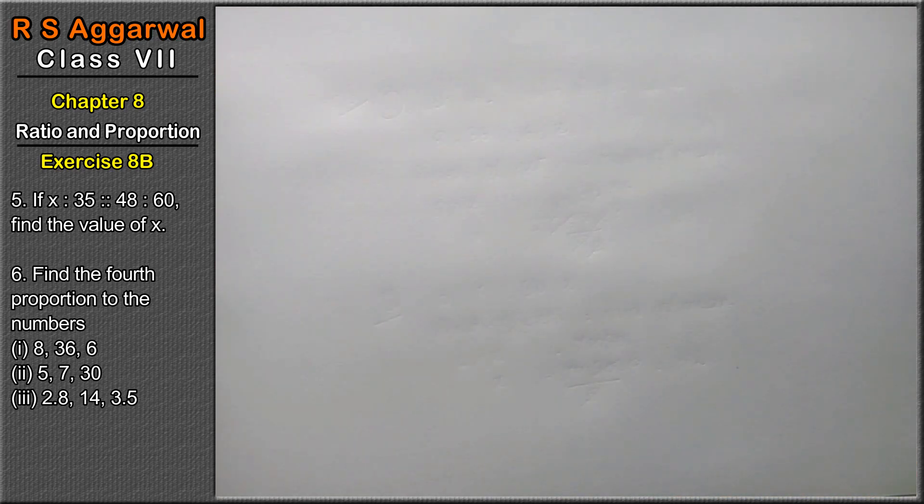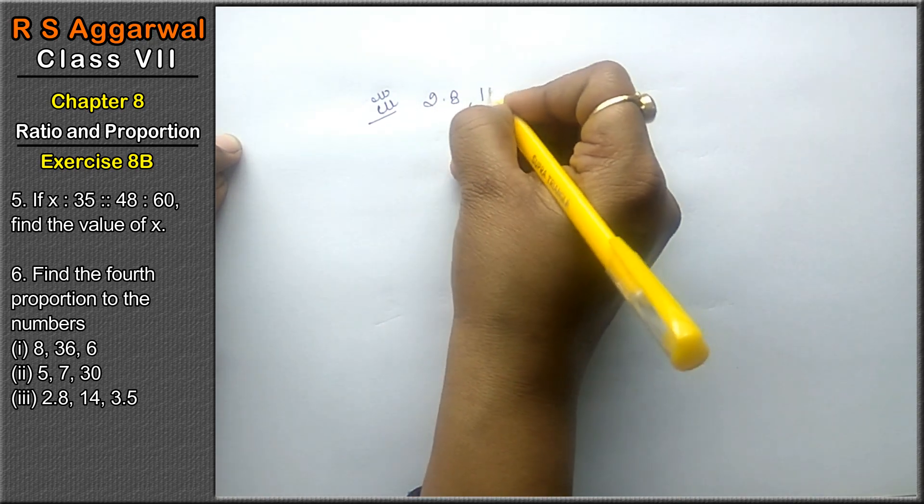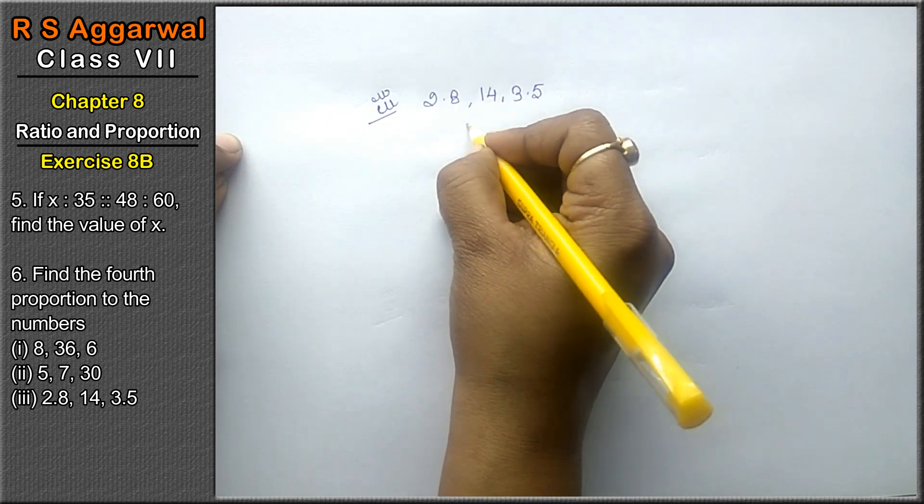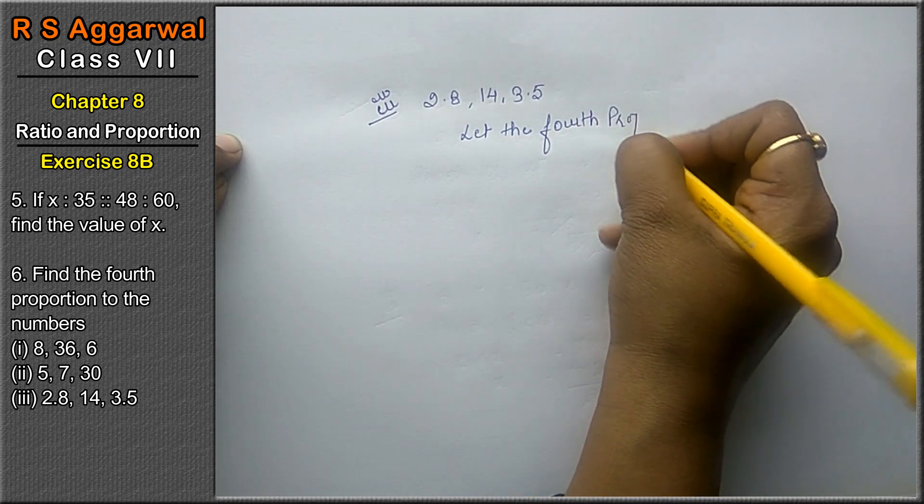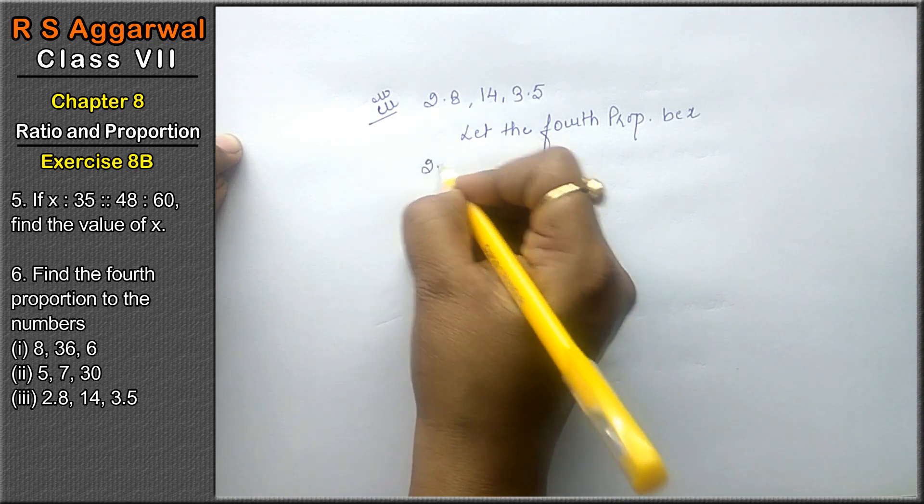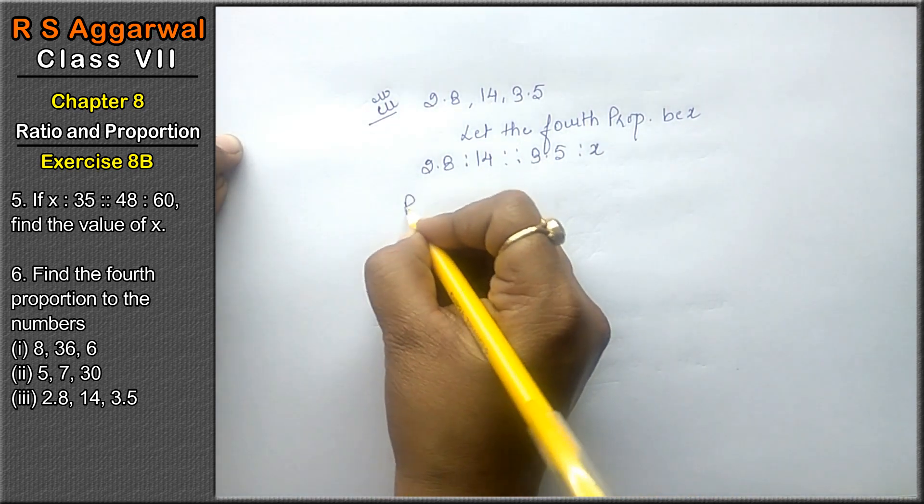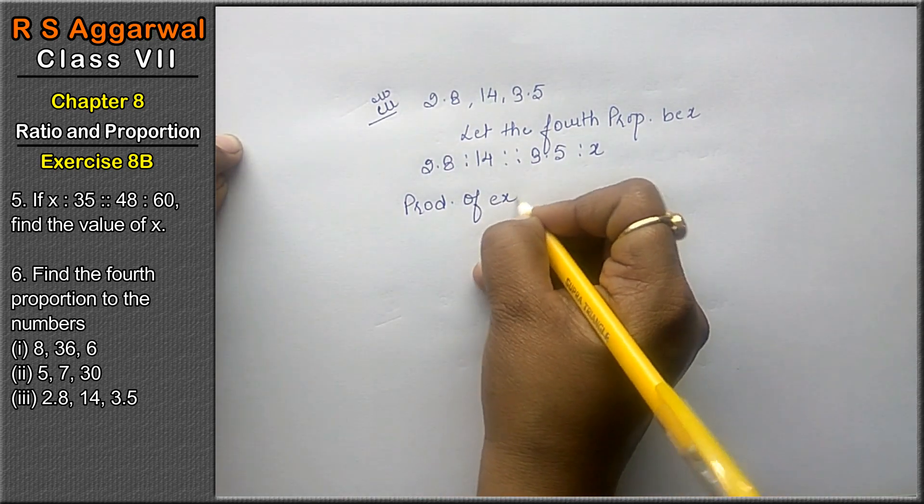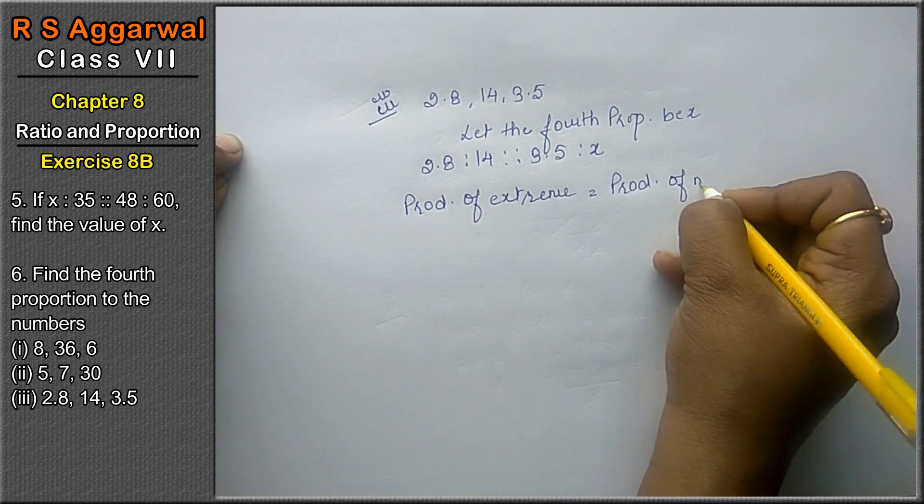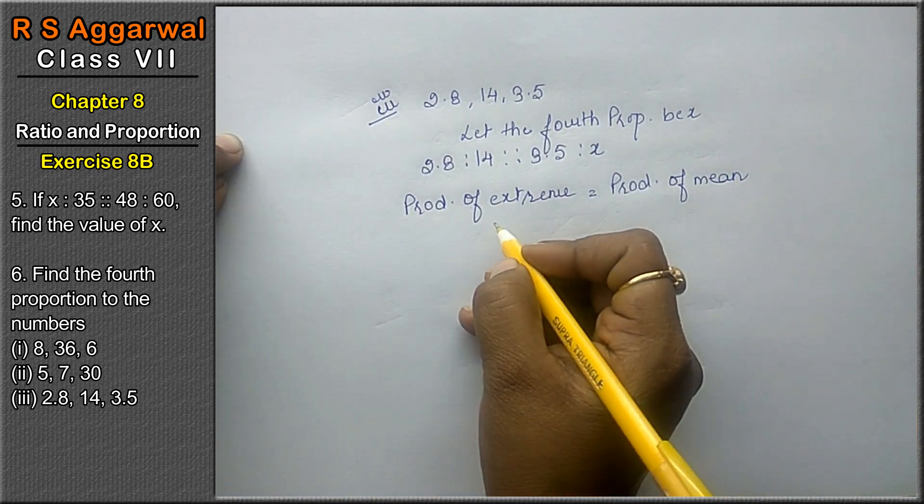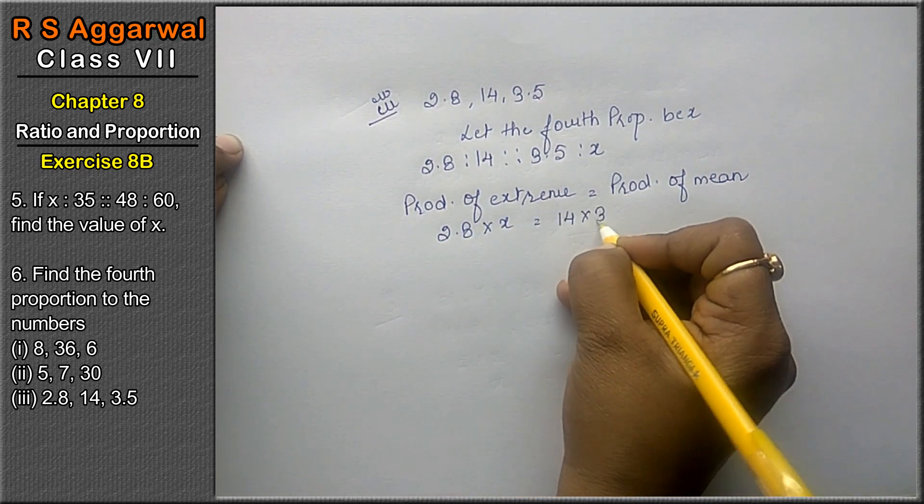Let's do third part. Third part is 2.8, 14, and 3.5. We have to find the 4th proportion. Let the 4th proportion be x. So 2.8 is to 14 is to 3.5 is to x. Product of extreme equals to product of mean. Now product of extreme is 2.8 into x, product of mean is 14 into 3.5.